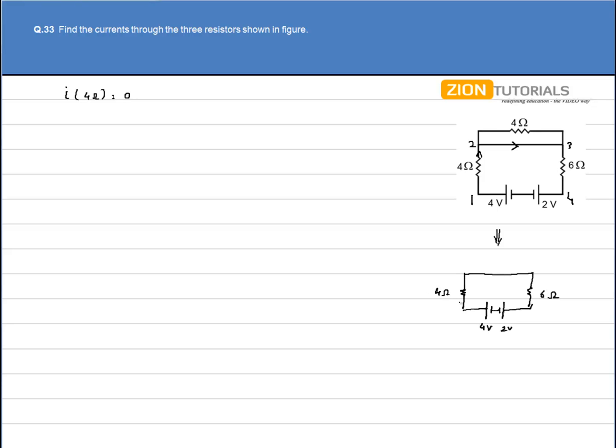So we have to calculate the current and obviously they are in series so the current through this 4-ohm and 6-ohm will be the same. So we have Kirchhoff's law.